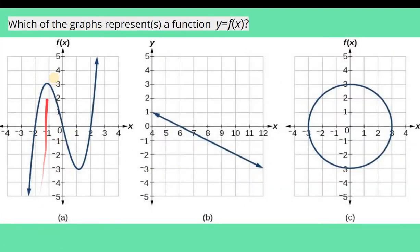So if I would draw a line here, I would only hit it once, here, here, and here. Now, in the same manner, if I do it in the second graph, wherever I would draw my vertical line, it would only hit it once. So that means that both of these graphs are functions.